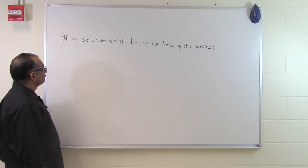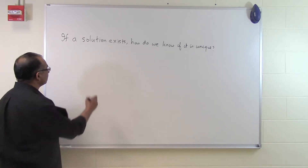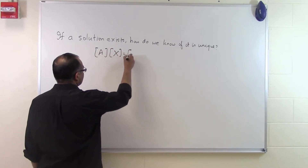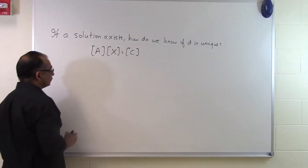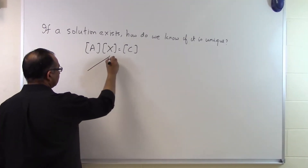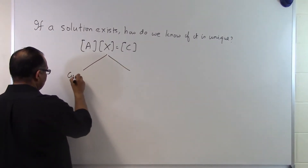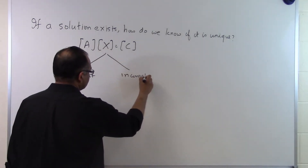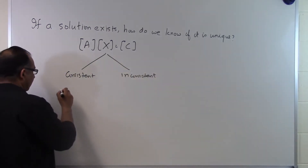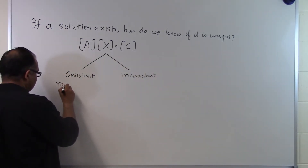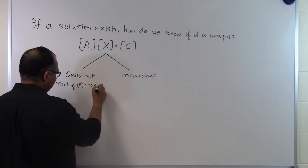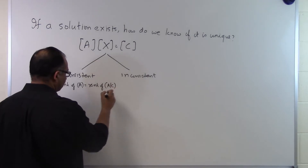In this segment we will talk about: if we have a system of equations and a solution exists, how do we know if it is unique? So let's suppose somebody gives us a set of equations Ax equal to C. We have so far demonstrated that we can make a distinction between a system of equations being consistent or inconsistent, and this is based on whether the rank of A is equal to the rank of the augmented matrix AC.